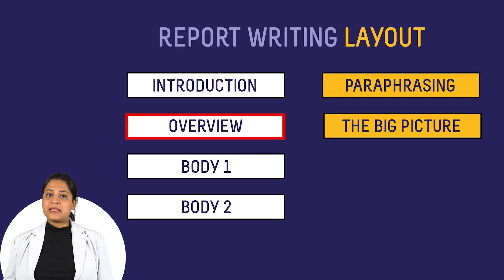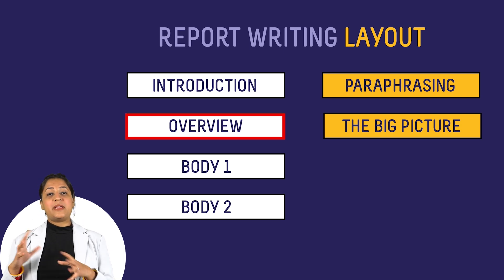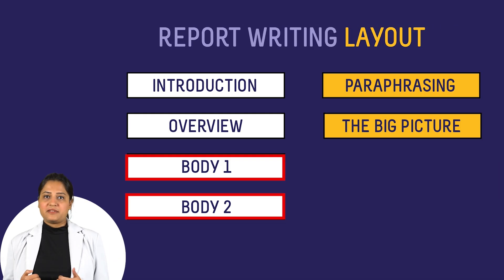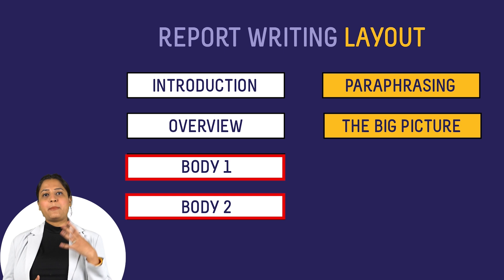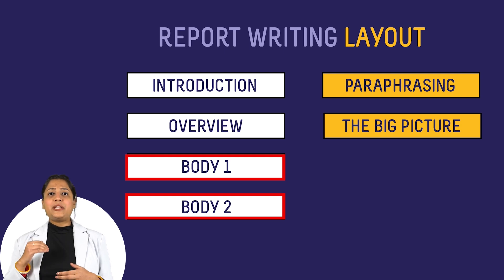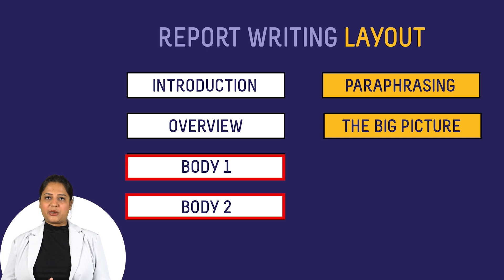In the overview paragraph, we need to present the most evident features of the visual. In other words, this tells the reader about the big picture of the data in the question. Ensure that you don't mention any numbers, figures, or percentages in this paragraph. The overview should not take more than 40 words. Then we have the body paragraphs, where you are required to compare and contrast the important information and features depicted in the illustration. Remember, we don't need to talk about everything shown in the graph, chart, or table — only the information which is quite unique and easily noticeable should be included.